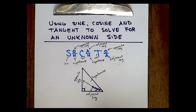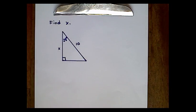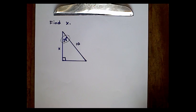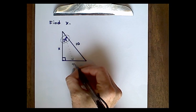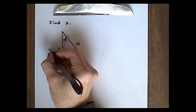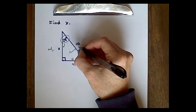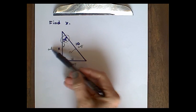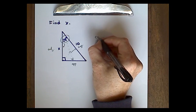Now that we know what these functions represent, let's go ahead and solve a problem. We have a right triangle, and we're trying to solve for x. Looking at the given angle, the side opposite it is identified, the adjacent leg is x, and the hypotenuse is always the side opposite the right angle. The function that uses adjacent and hypotenuse is the CAH in SOHCAHTOA — so we're going to use cosine.